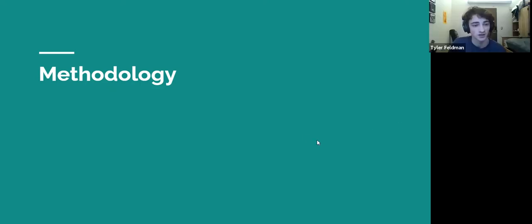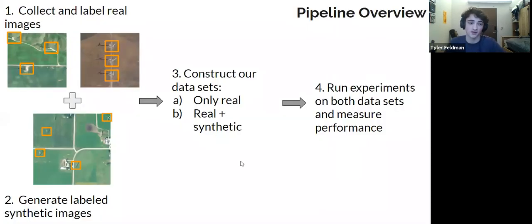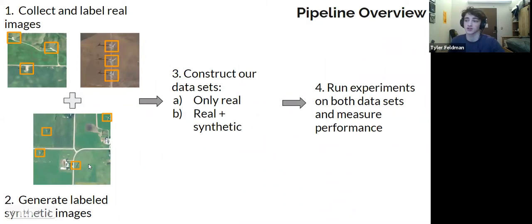We have this synthetic data and the goal in our methodology is to test whether this synthetic data can help improve the performance of our object detection model. We're going to run through a couple of steps. The first step is to collect and label real images. These orange boxes represent the labels for these wind turbines. The second step is to generate the synthetic images. Once we have the synthetic and real images, we can construct two different datasets and run the experiments.